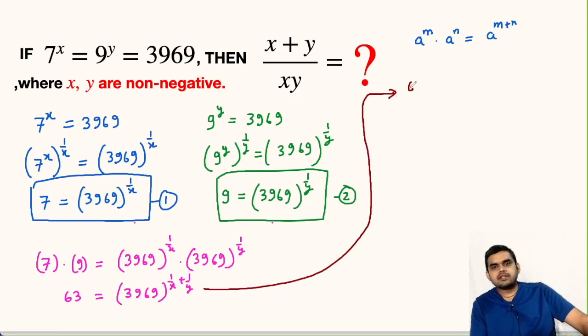So this will be 63 equals, now in place of 3969 we see that this is square of 63. 63 square is 3969 and here we can take LCM as xy and it will be y+x.